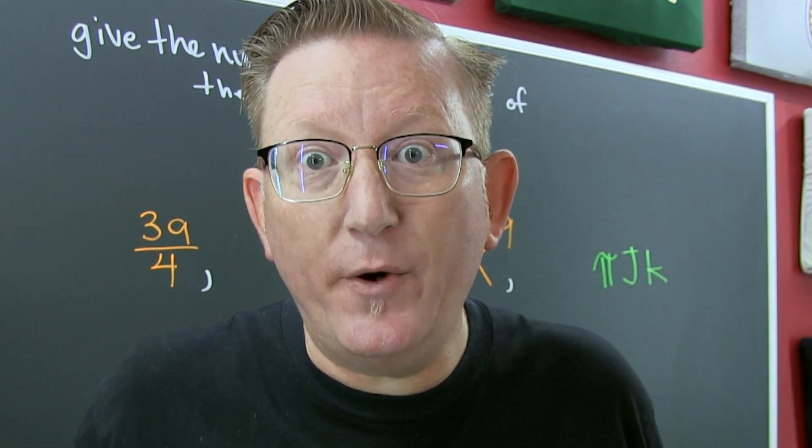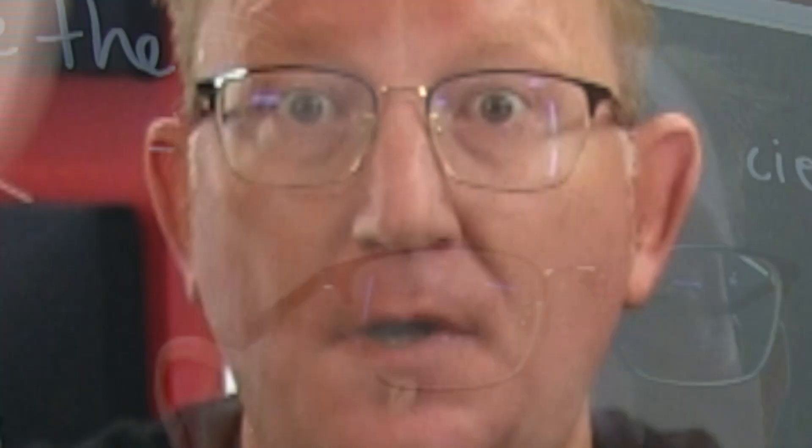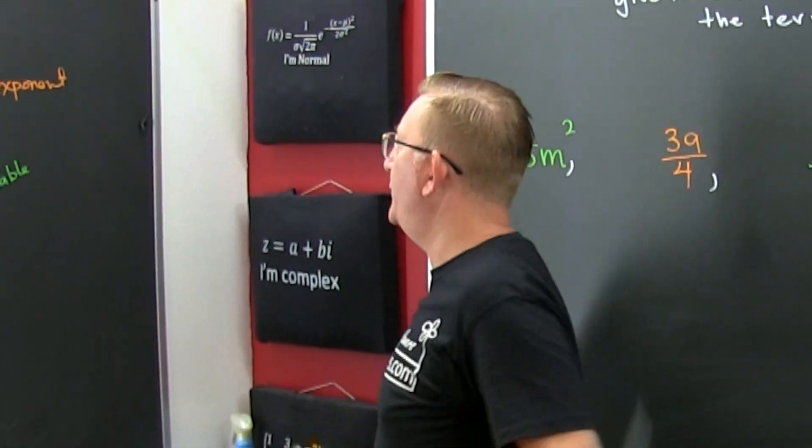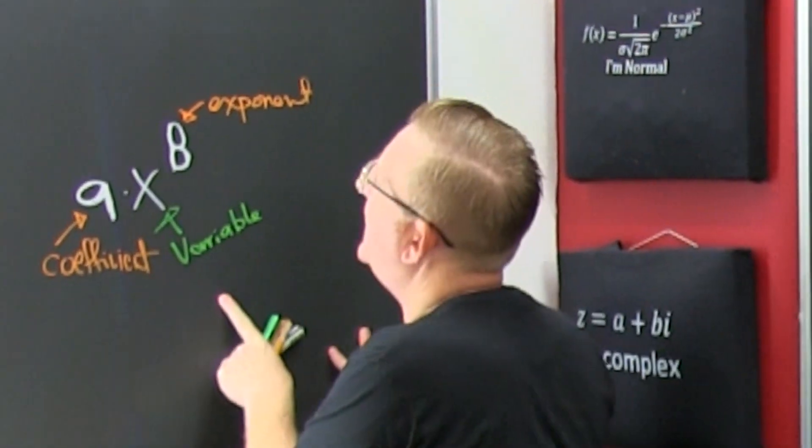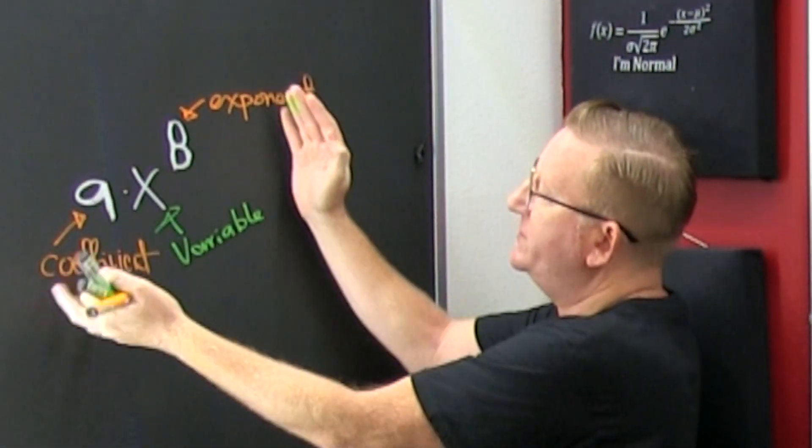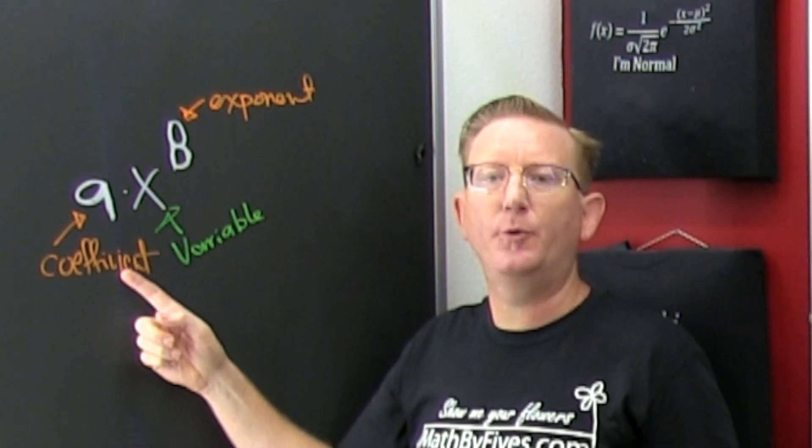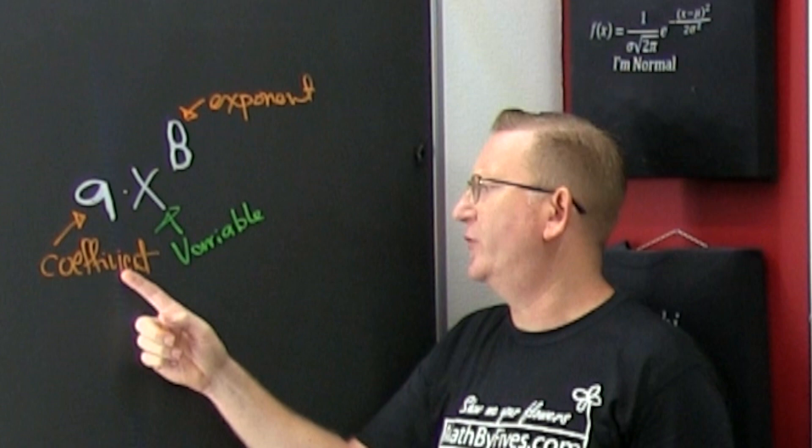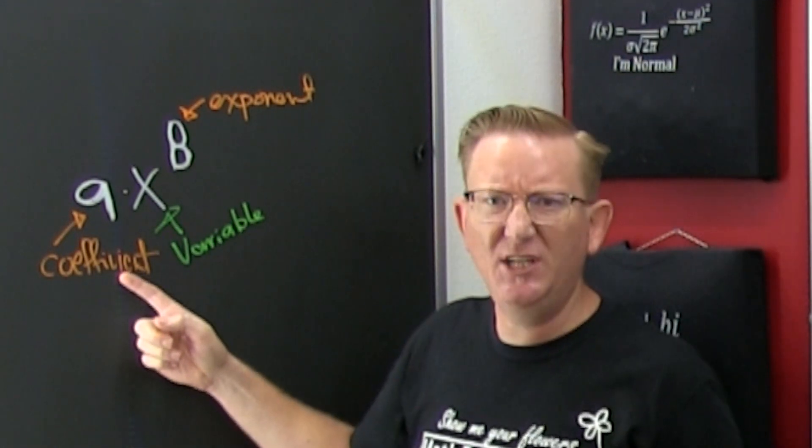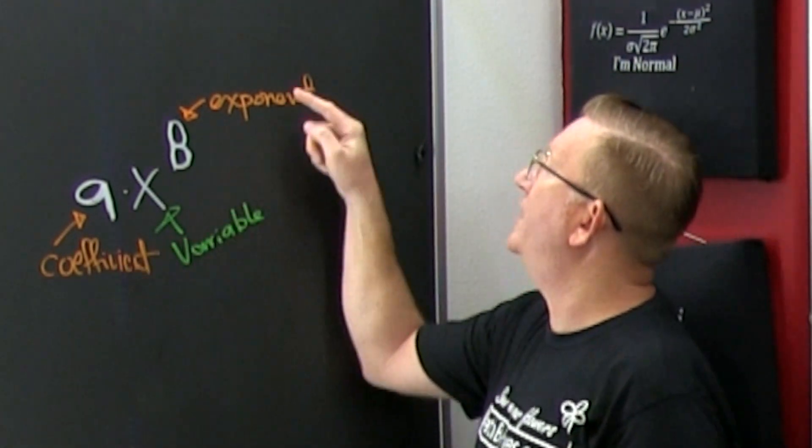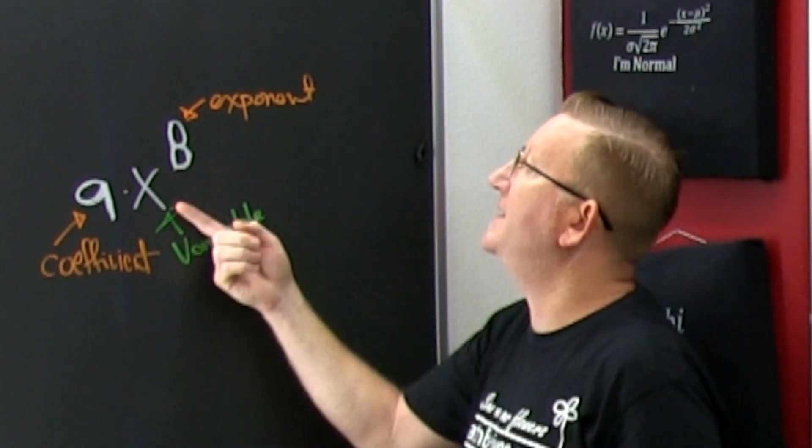Let's find the numerical coefficient. So if you have one term, the number in front is called the coefficient - that's what we're looking for. We're also going to look at the other parts: the exponent and the variable part.